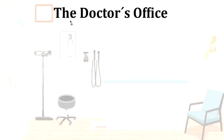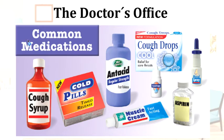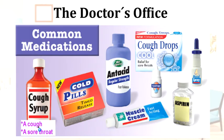We are at the doctor's office. Last time we had vocabulary about different types of health problems. Today we have vocabulary about different common medications for those health problems. For example, here we have cough syrup, and we take cough syrup for a cough or maybe a sore throat.